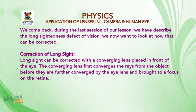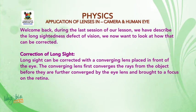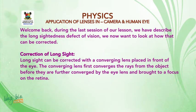During the last segment, we described the long-sightedness defect of vision. We now look at how it can be corrected. Long sight can be corrected with a converging lens placed in front of the eye. The converging lens converges the rays from the object before they are further converged by the eye lens and brought to a focus on the retina.